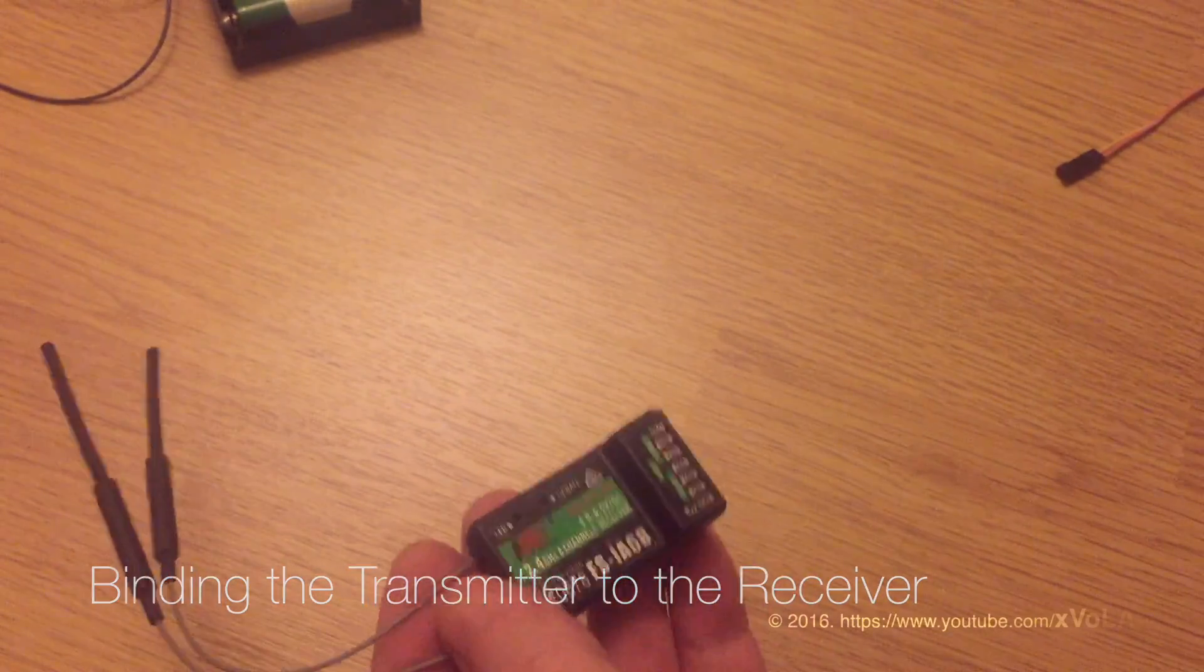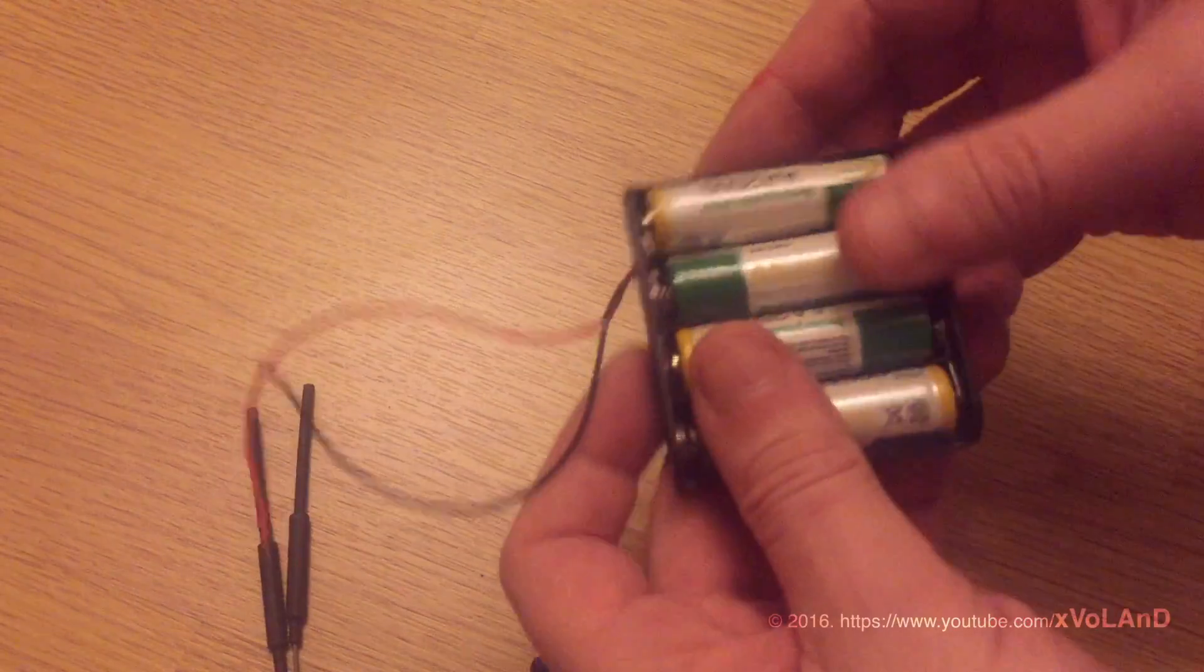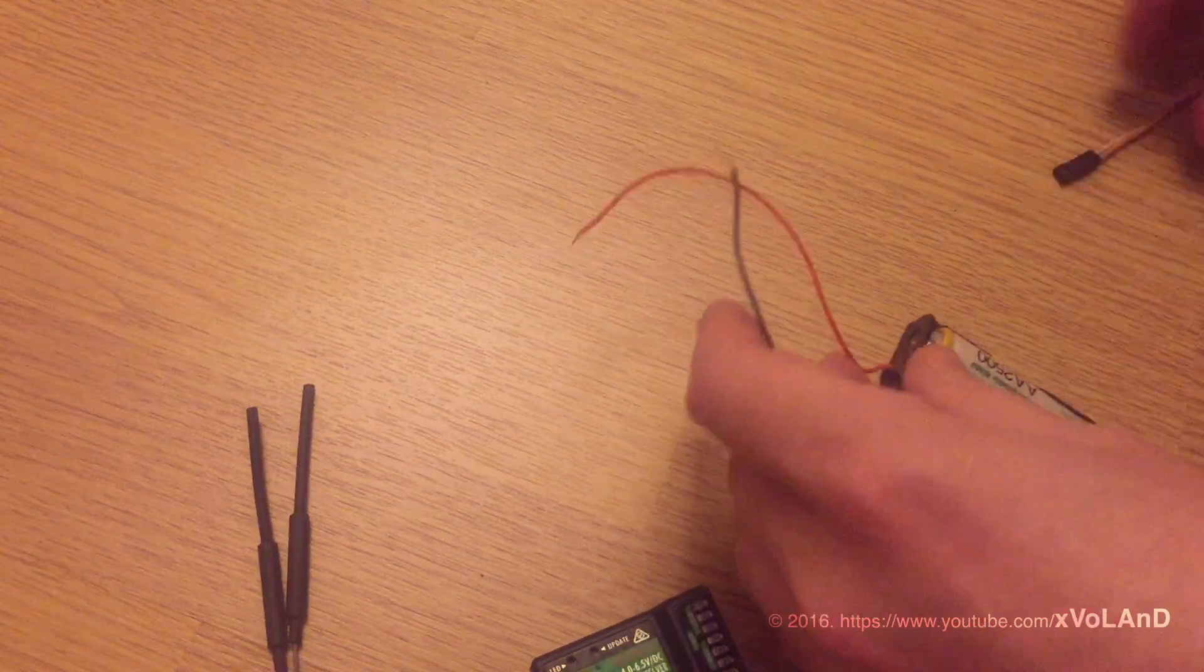First, what you need is to install the battery to the transmitter and turn it off.